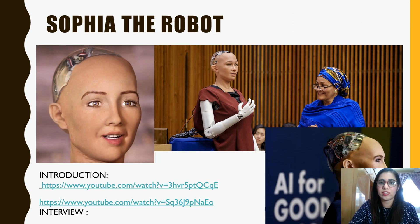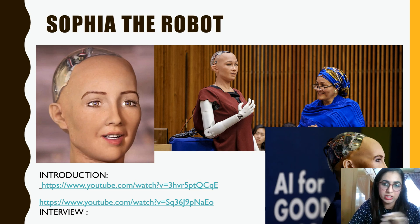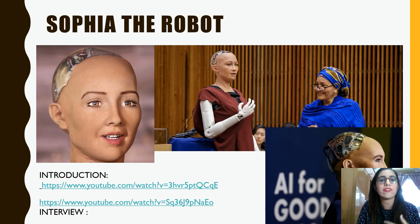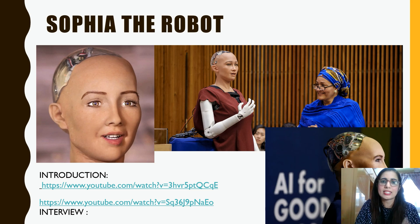Before we go into all that, let's look at Sofia the Robot, introduced in your textbook. Sofia is a social humanoid robot developed by Hong Kong-based company Hanson Robotics. Sofia was first turned on on February 14, 2016. She is able to imitate human gestures and facial expressions, and is able to answer certain questions and make simple conversations.